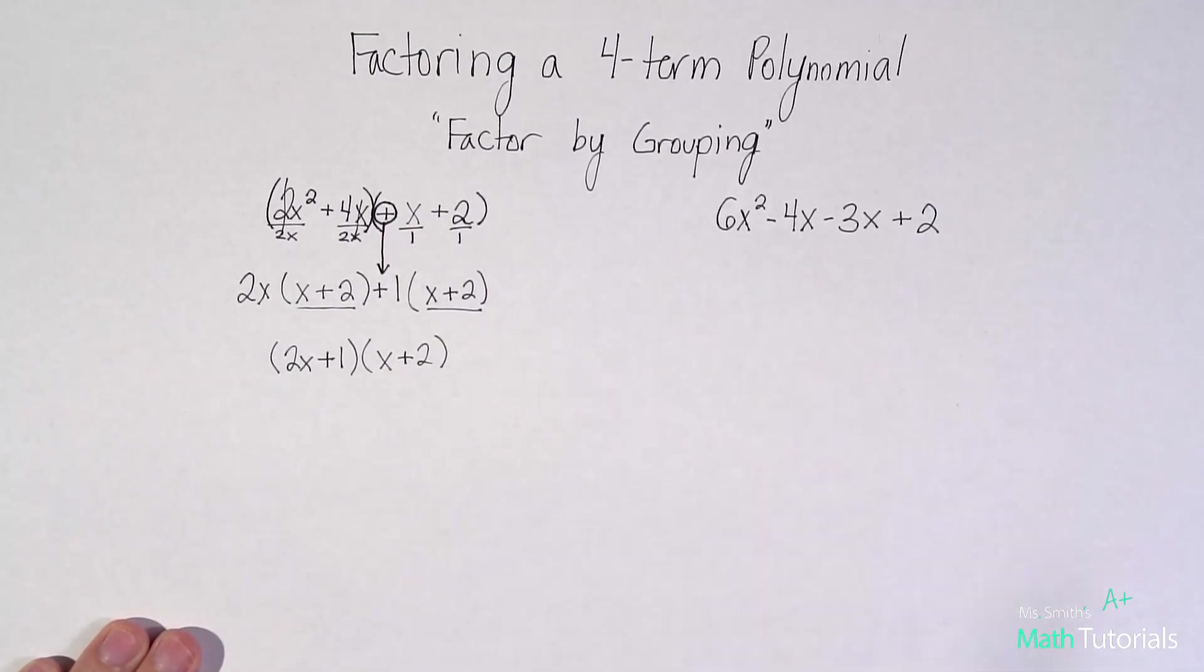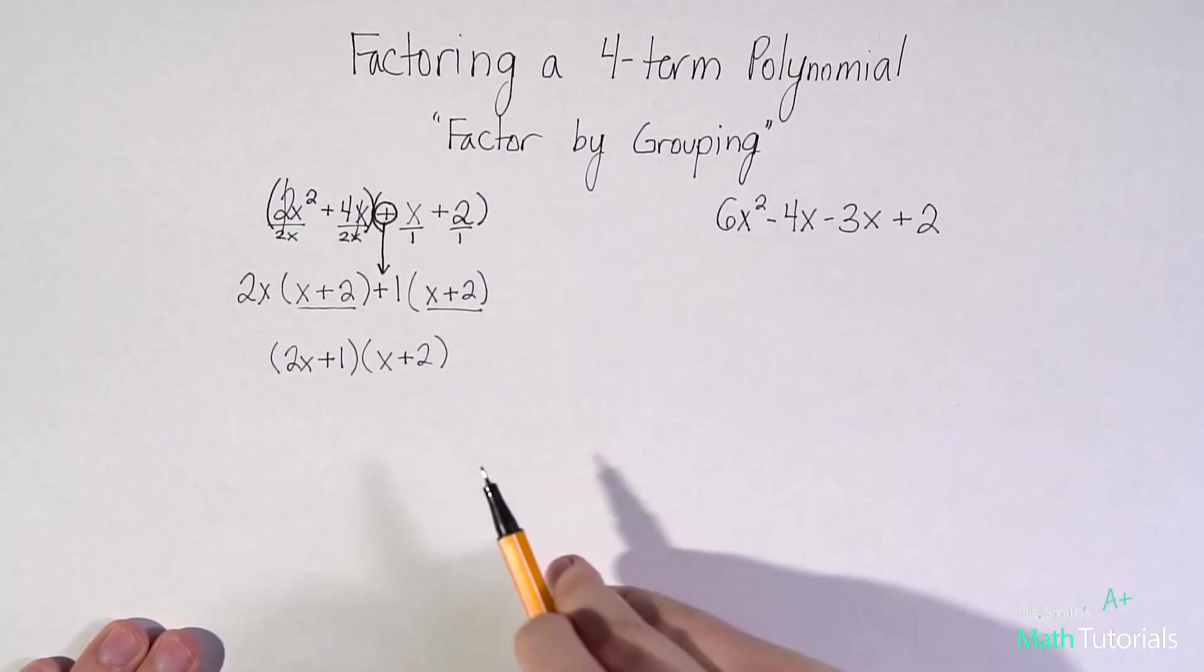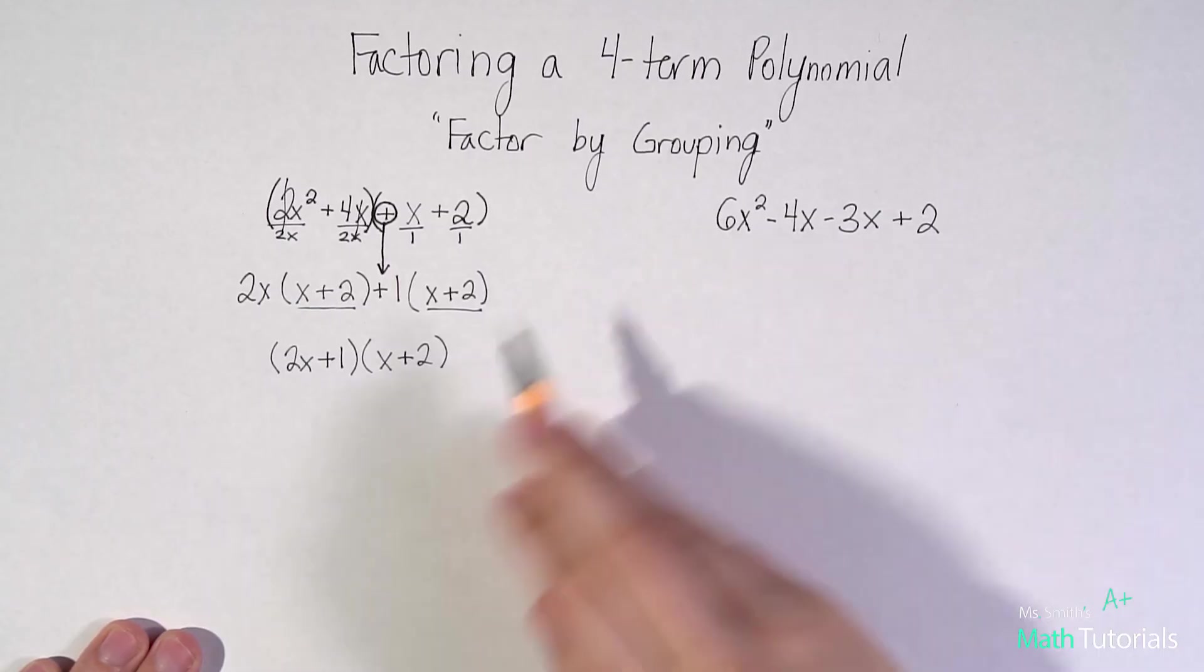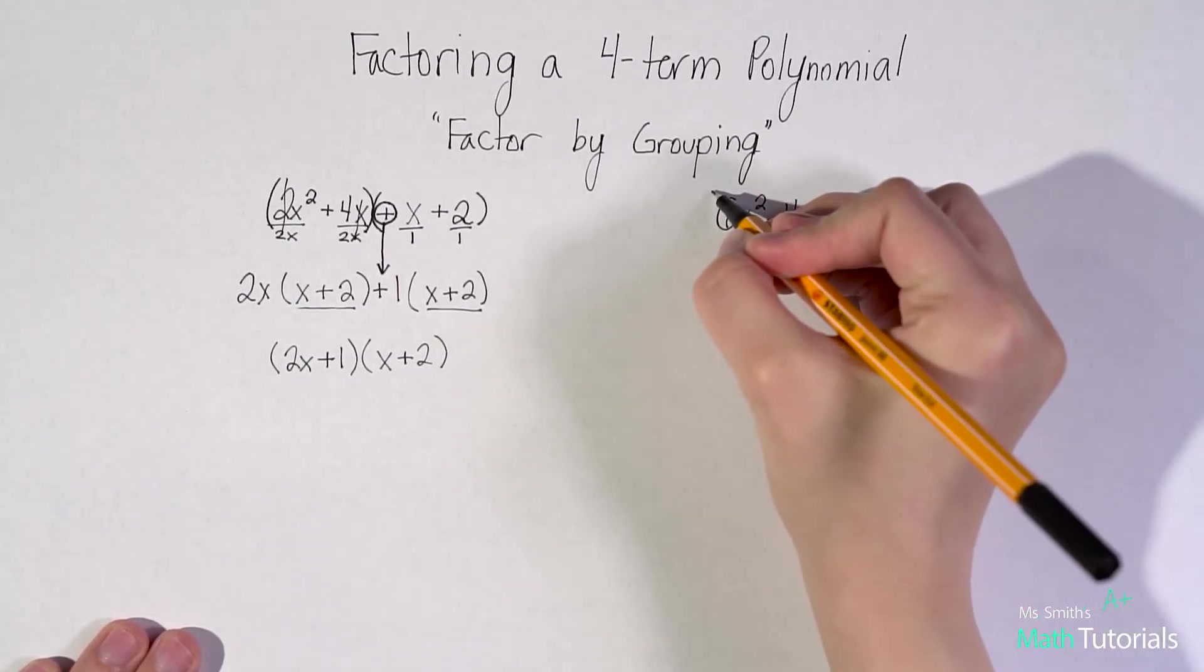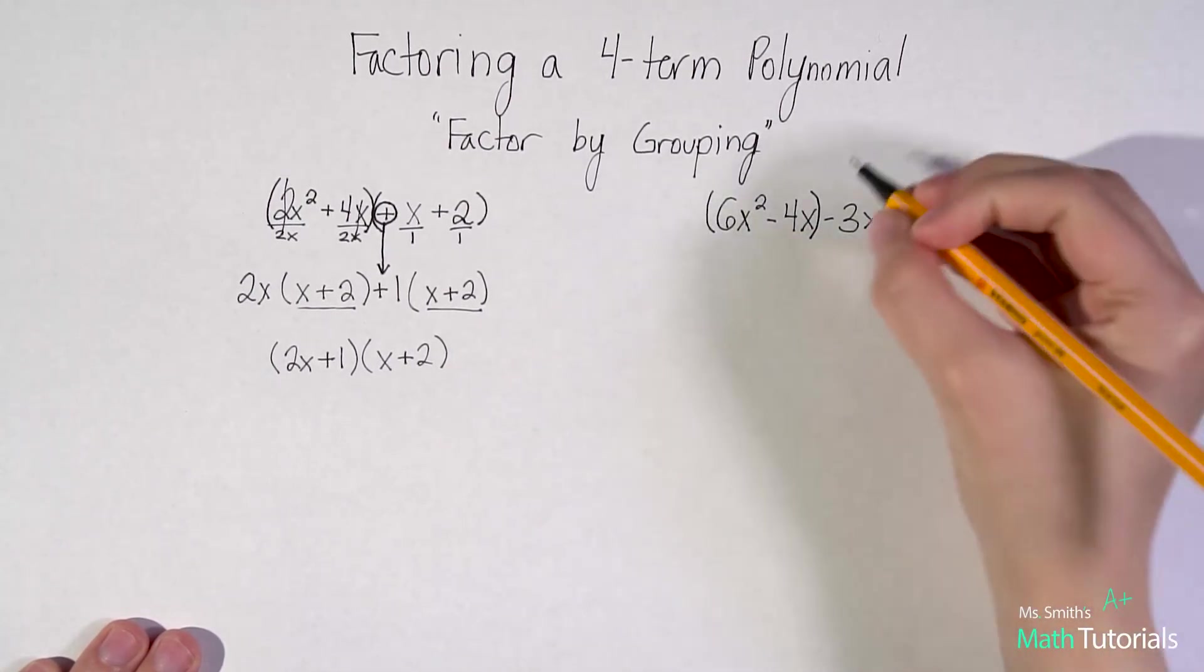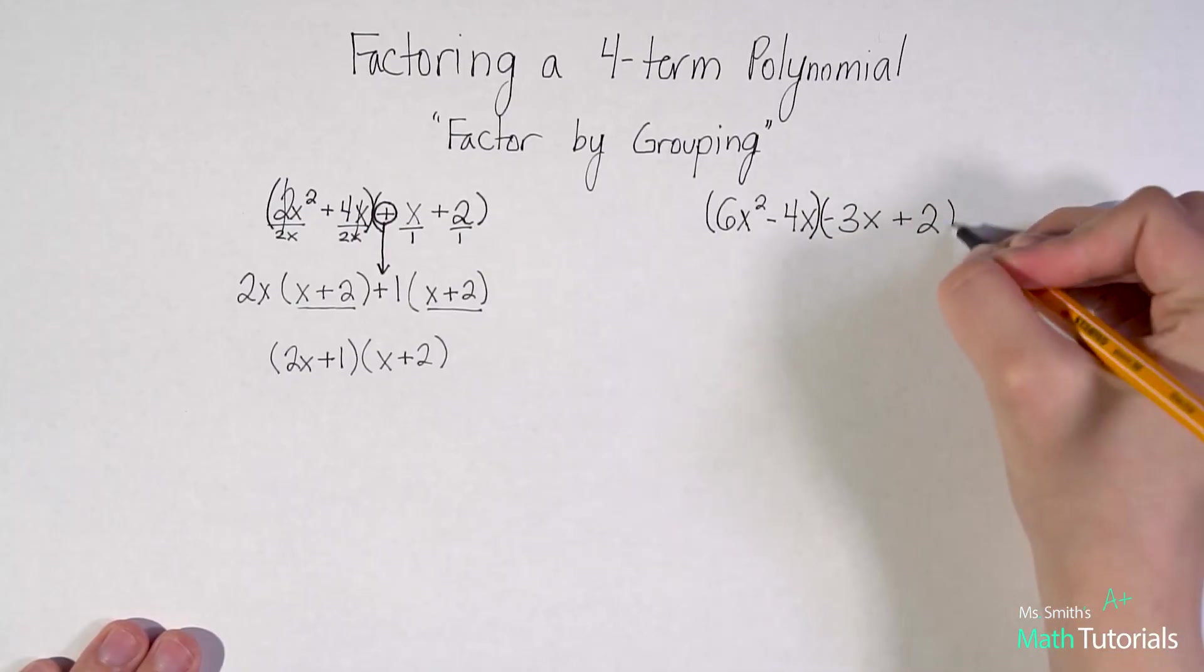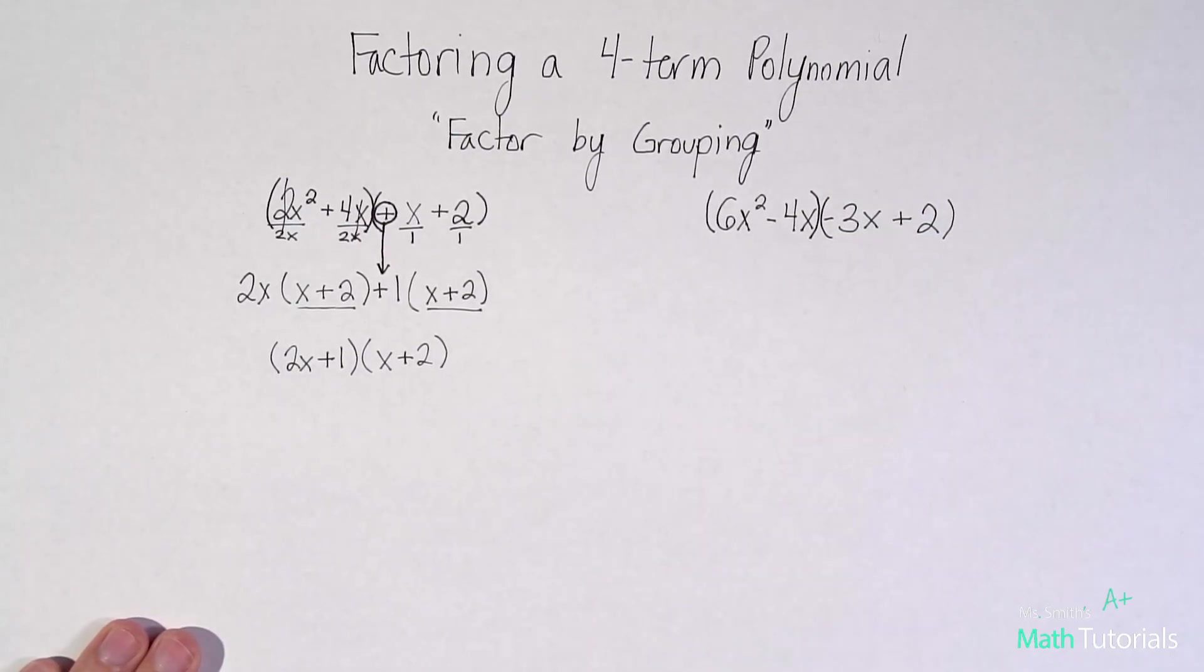Let's go to a second example. So I've got a four term polynomial, one, two, three, four, all separated by adding or subtracting signs. So I'm going to do factor by grouping. I'm going to group my first two terms together, and I'm going to group my second two terms together, making sure I include that sign with the second group.